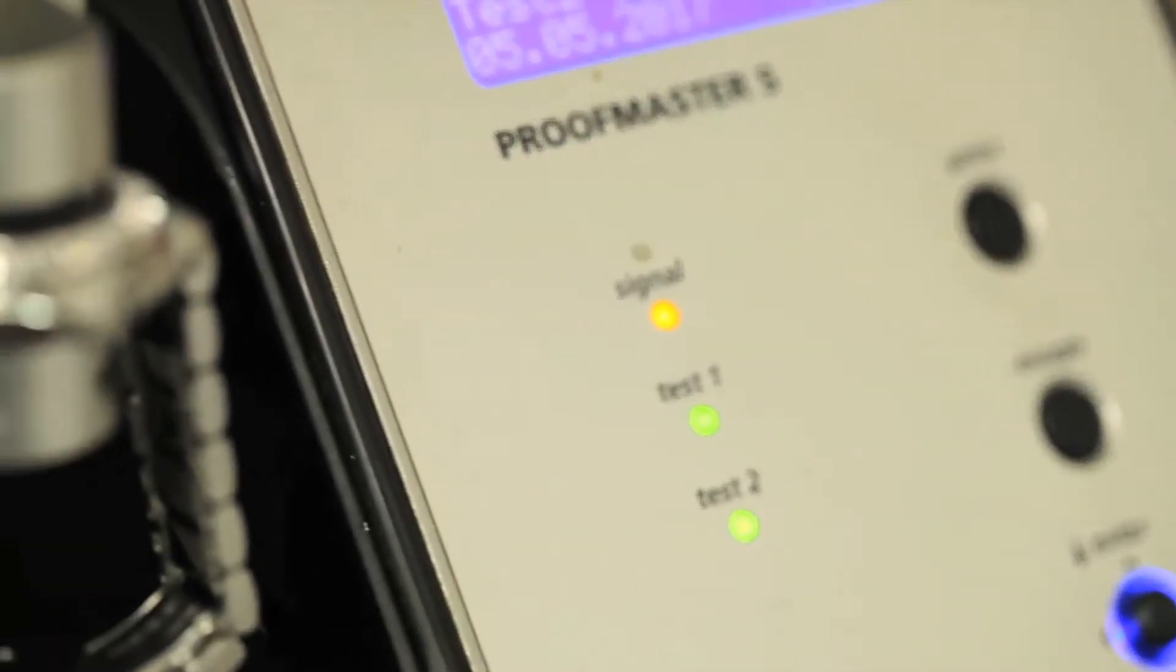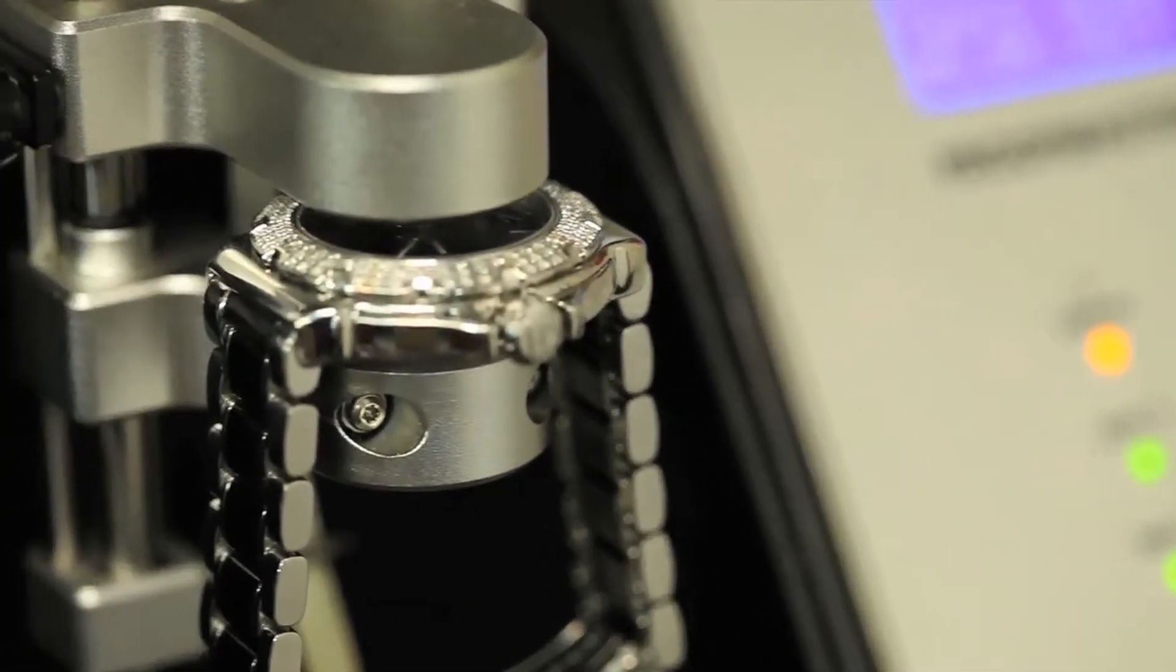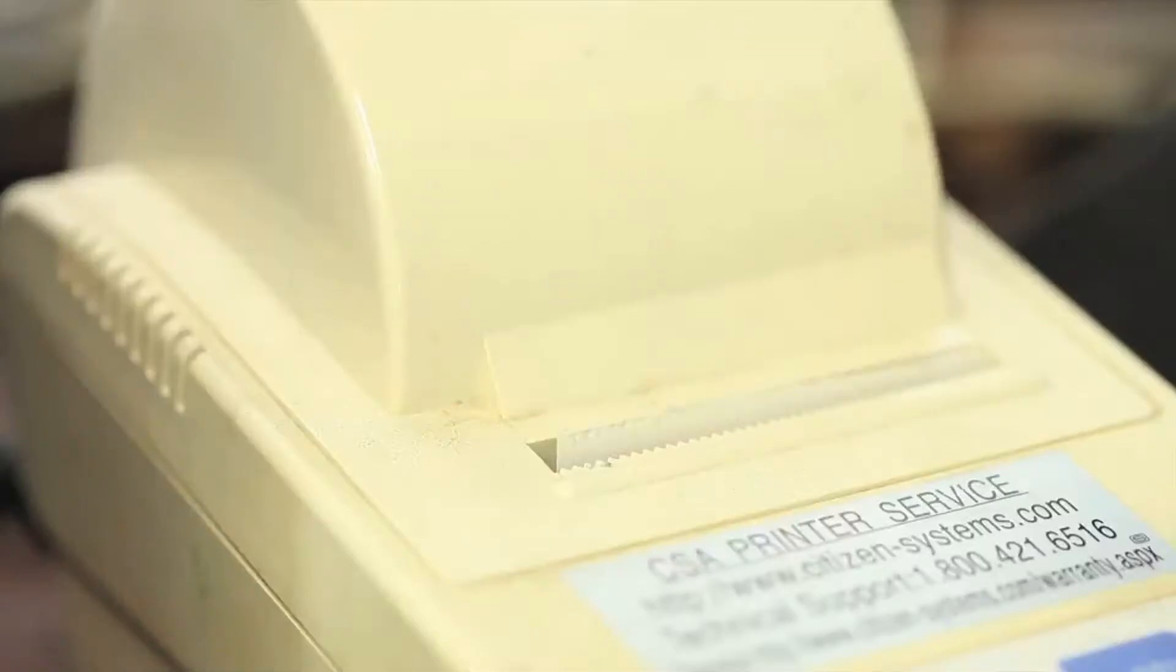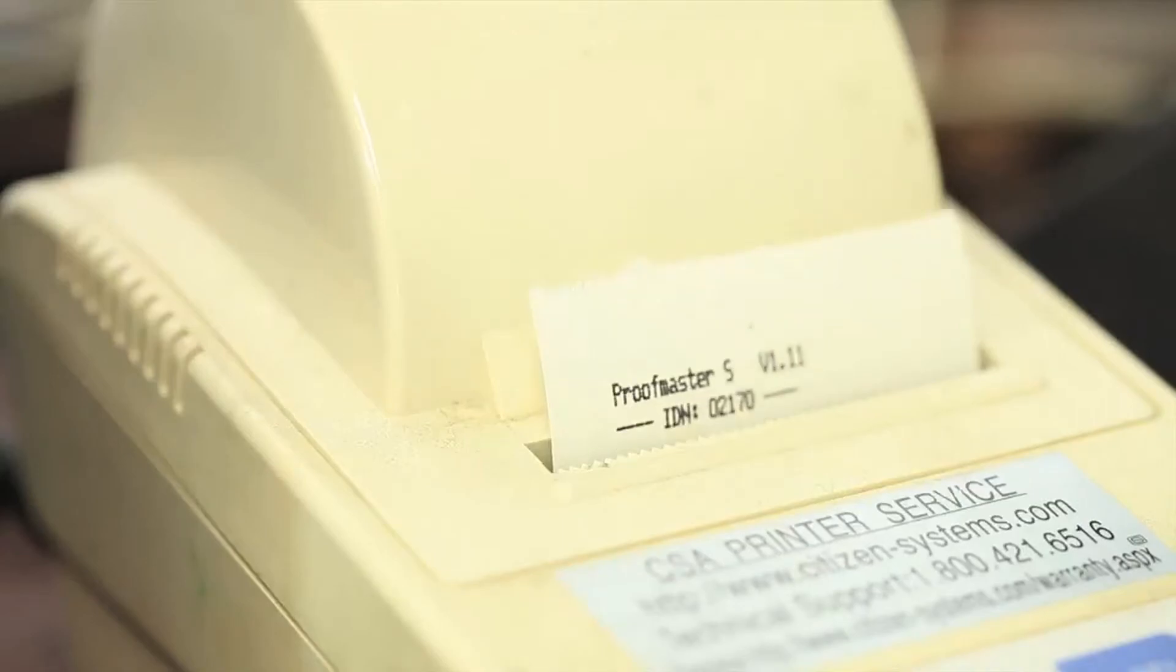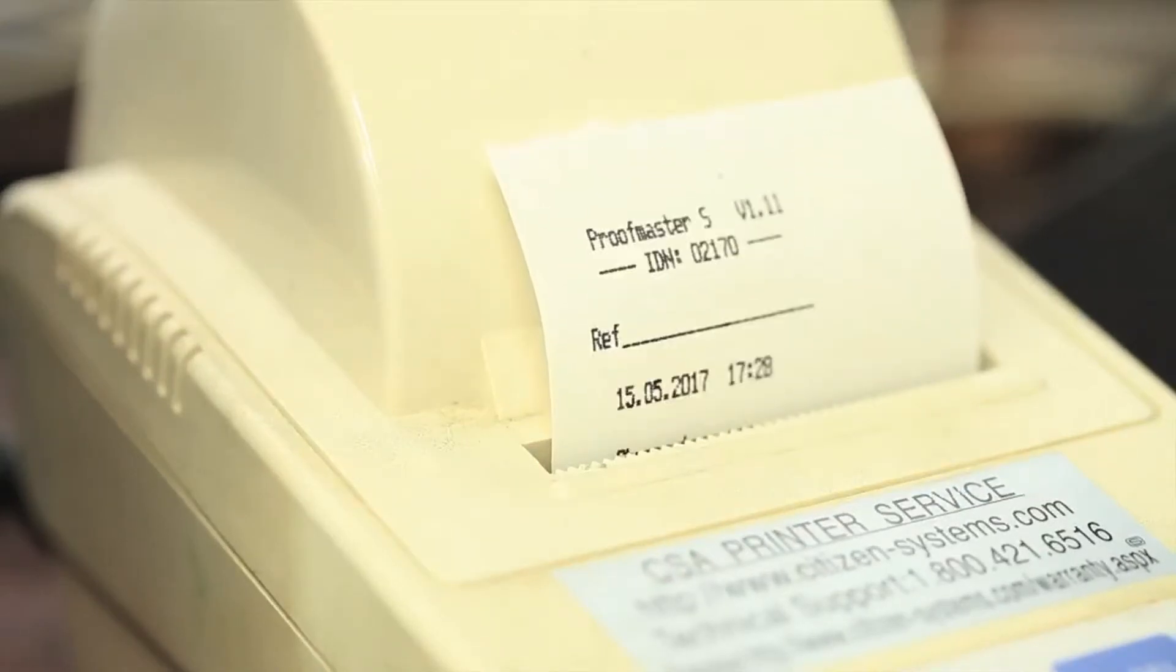Too much pressure can damage the watch since it goes under expansions and contractions while under pressure. More importantly, the machine prints its results directly showing the accuracy of the test and the watch's water resistance.